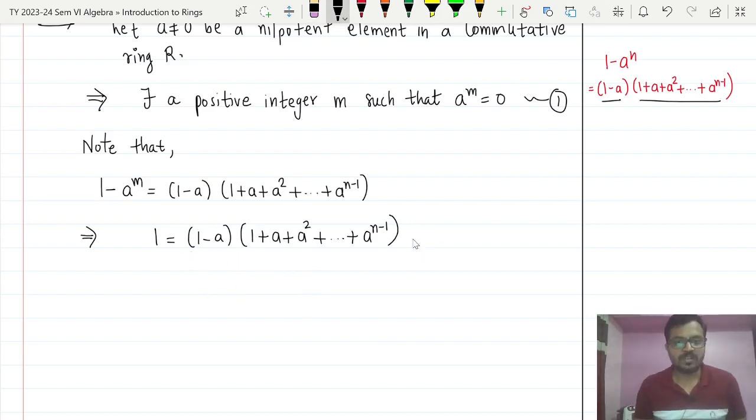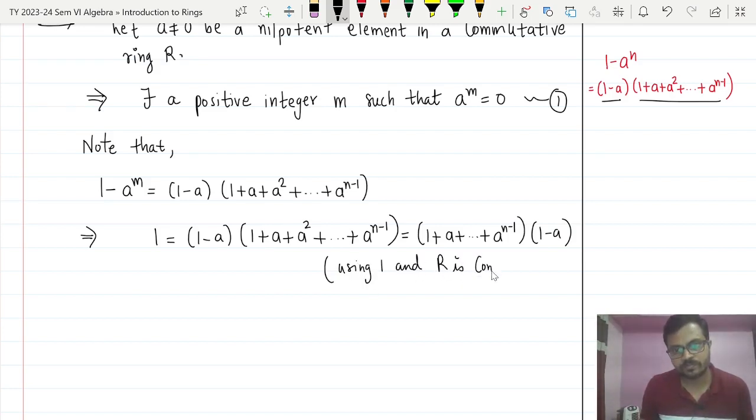So in other words, what we have shown: 1 minus a is a unit. Or even you can write this is further equal to 1 plus a plus so on plus a raised to n minus 1 into 1 minus a. Here we have used that R is commutative, and this implies 1 minus a is a unit.